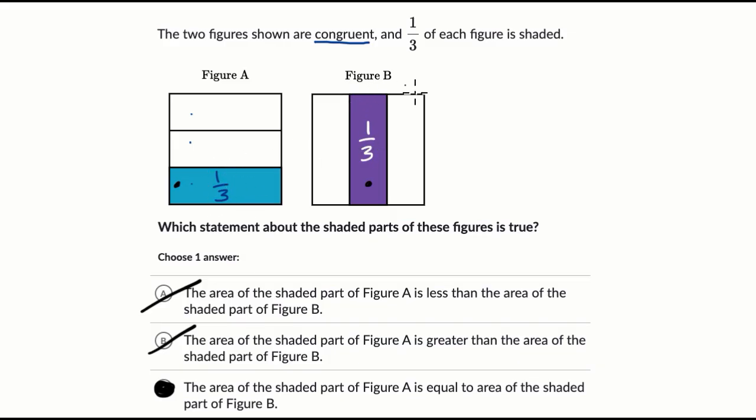But we know the figures are congruent, so their total areas are going to be the same. So one-third of that total area is also going to be the same.